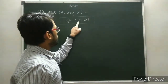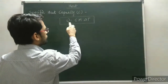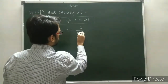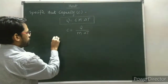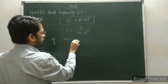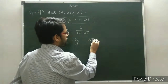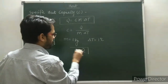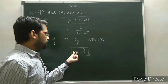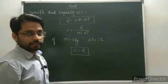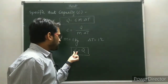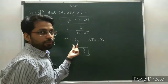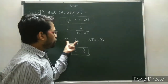From the relation Q = C·m·ΔT, we can rewrite the expression for C: C equals Q divided by m·ΔT. If m equals 1 kg and ΔT equals 1 degree Celsius, then C equals Q. So the definition of specific heat capacity of a material is: the amount of heat required to raise the temperature of a material of mass 1 kg through 1 degree Celsius.